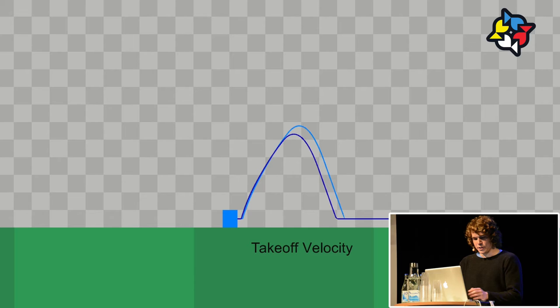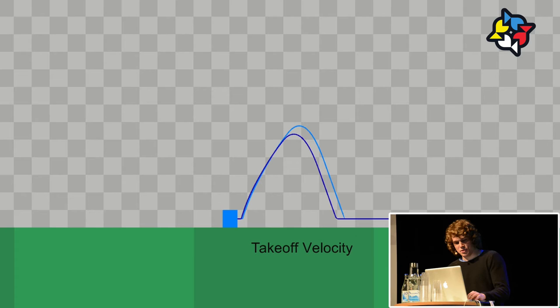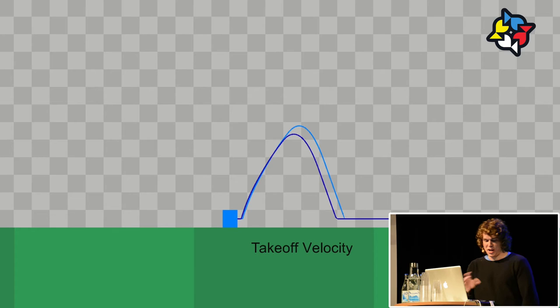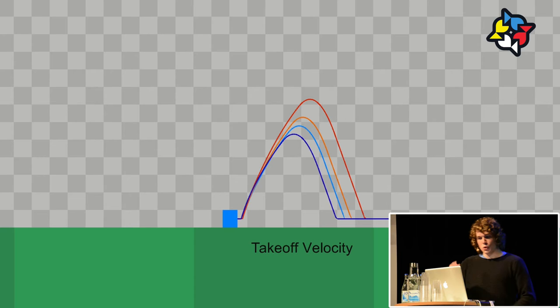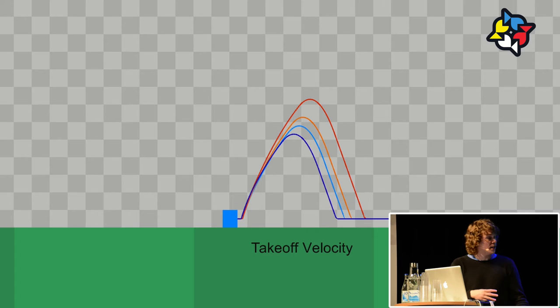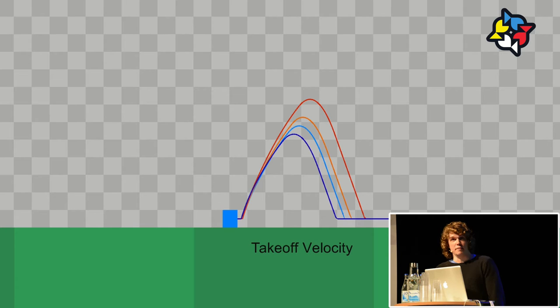Mario already shows something very different in the curve shape. First, he has more than one takeoff velocity. Meat Boy has one that covers everything regardless of run speed. Mario has multiple, determined by how fast he's running — the faster you go, the higher you jump — but it's not a linear relationship. There are discrete steps: a standing/slow jump, a slightly faster one, an orange running/sprinting one, and a maximum-speed one. Players likely feel it as a smooth relationship, but there are these discrete intervals.